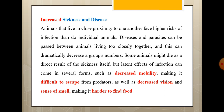Disease and parasites can be passed between animals living too closely together, and this can dramatically decrease a group's numbers. Because the disease spreads very quickly, it can dramatically reduce the population. Because the animals are infected together, they die together, and we suddenly see a drop in the population of that group.